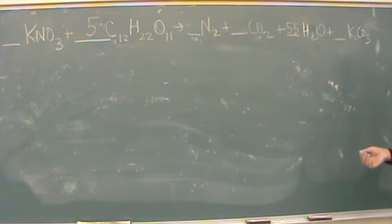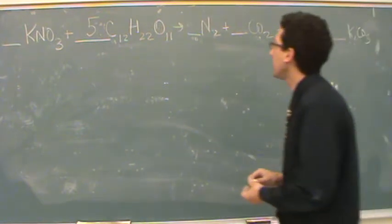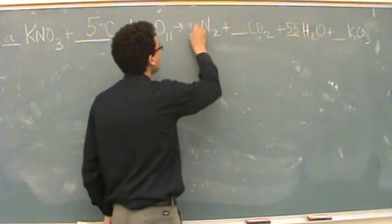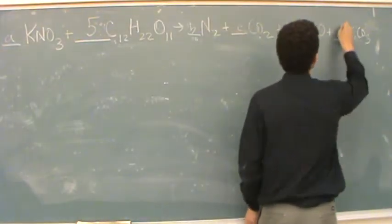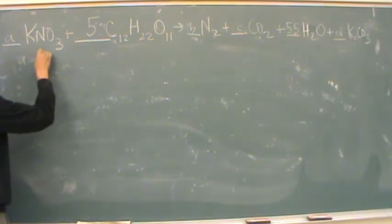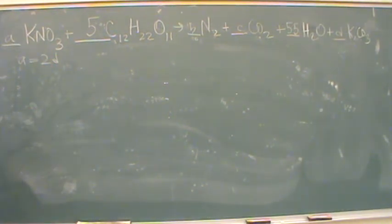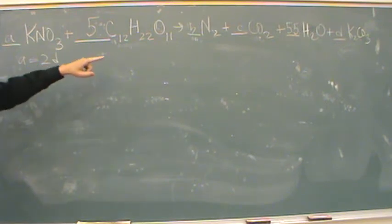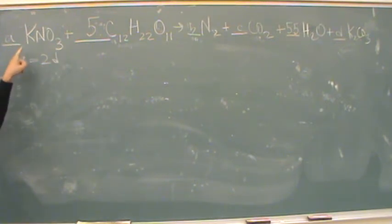Besides guessing and checking — I guess you could always do that. So what I would do is just go like A, pick your favorite letter, C, B — put them there. And then, for example, we know that A equals two times D. So two times D will equal A. That means there's four K's now.